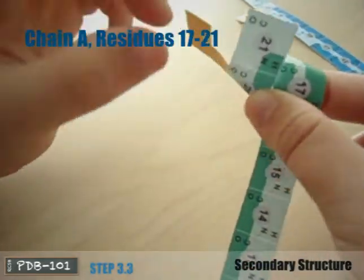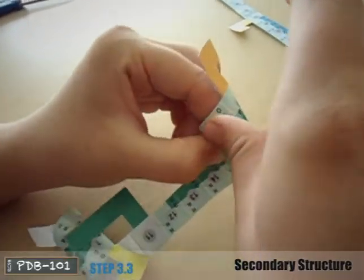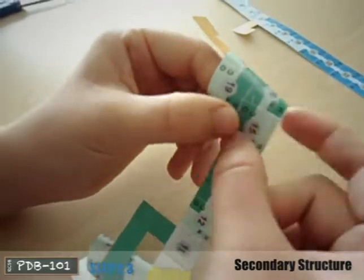Create another alpha helix starting with residues 17 and 21. Keep creating hydrogen bonds until you reach the end of the darker colored area.